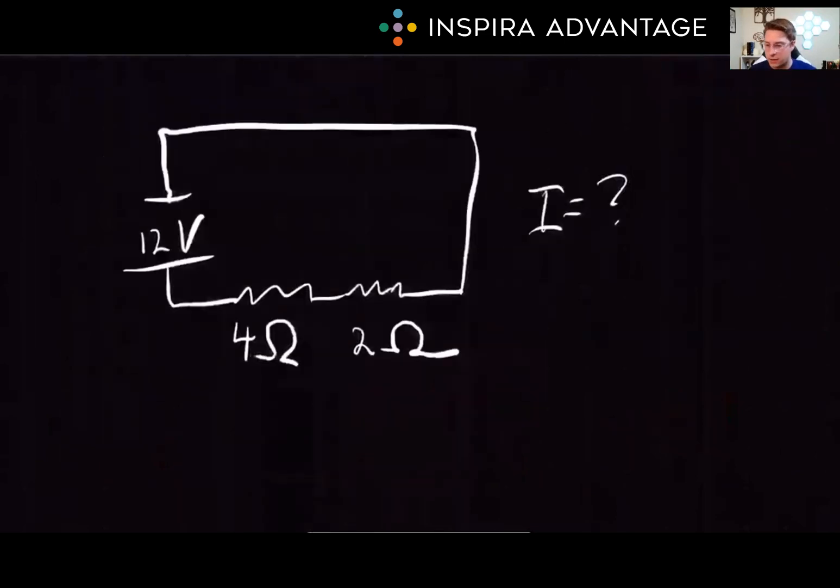Now, let's test your understanding with a practice problem. Suppose we have a circuit with a 12-volt battery, a 4-ohm resistor, and a 2-ohm resistor connected in series. What is the total current in the circuit, and what is the voltage drop across each resistor? Pause the video here and try and solve this using the concepts we just discussed.